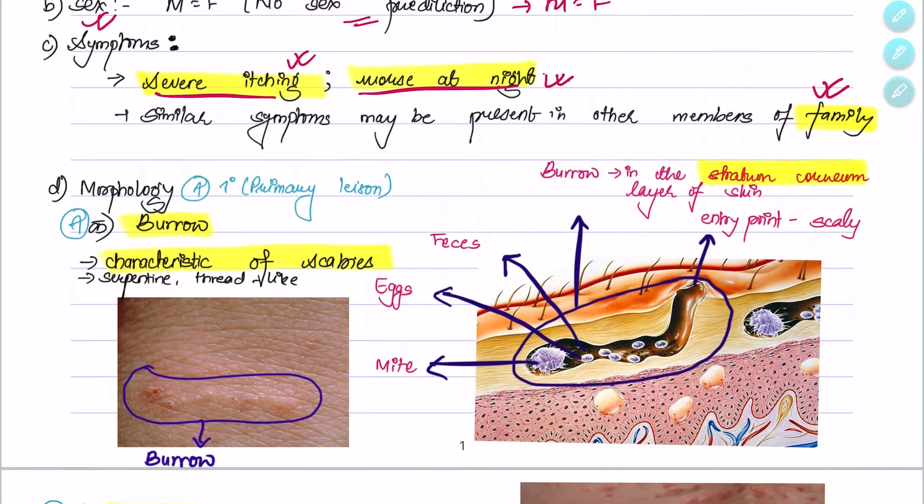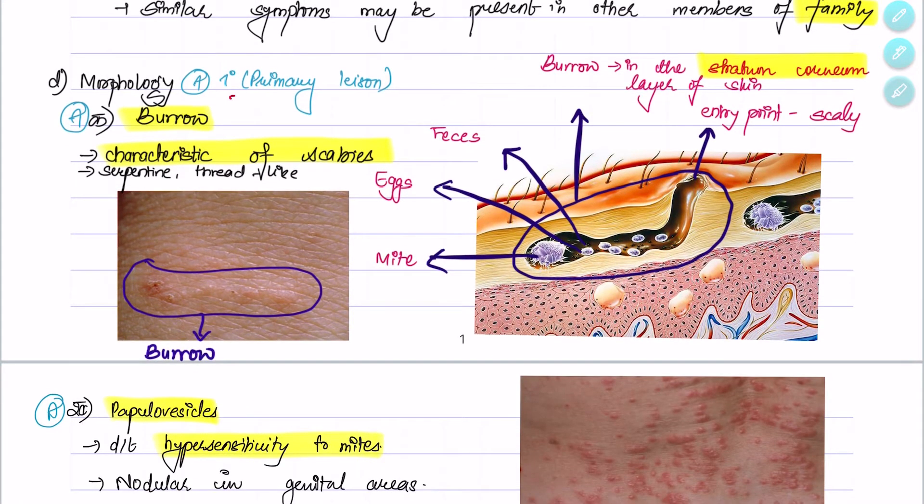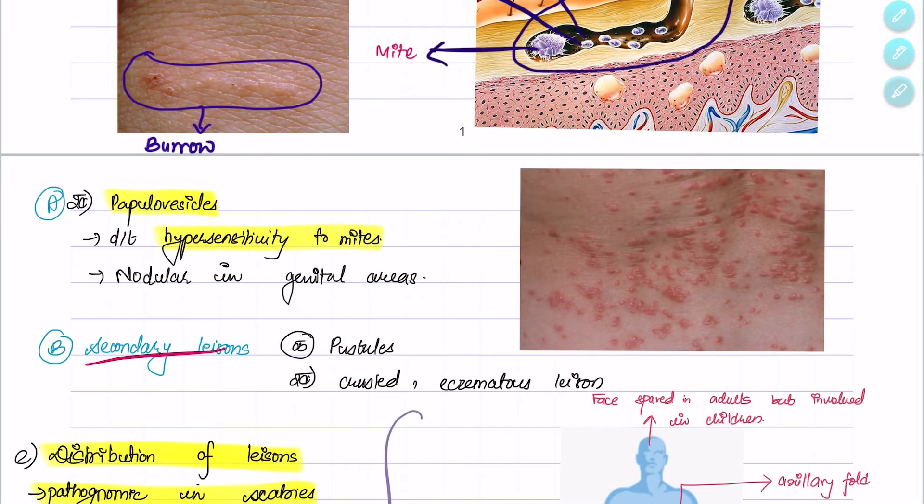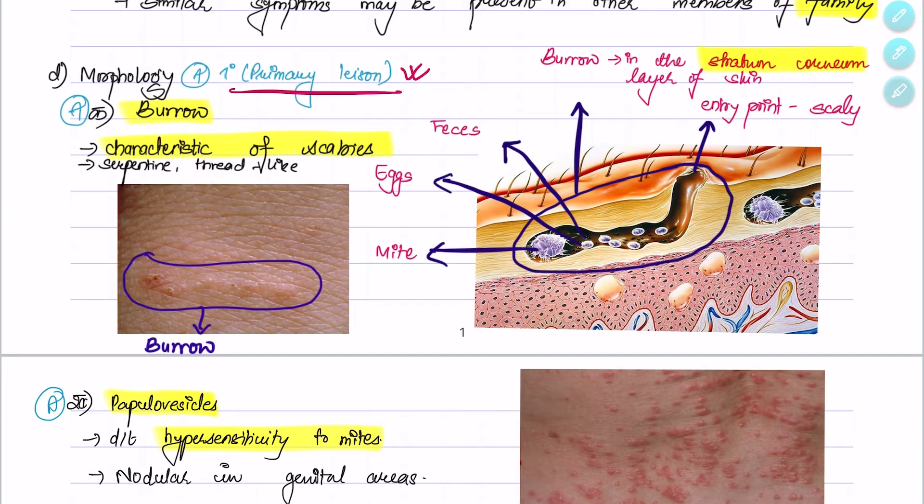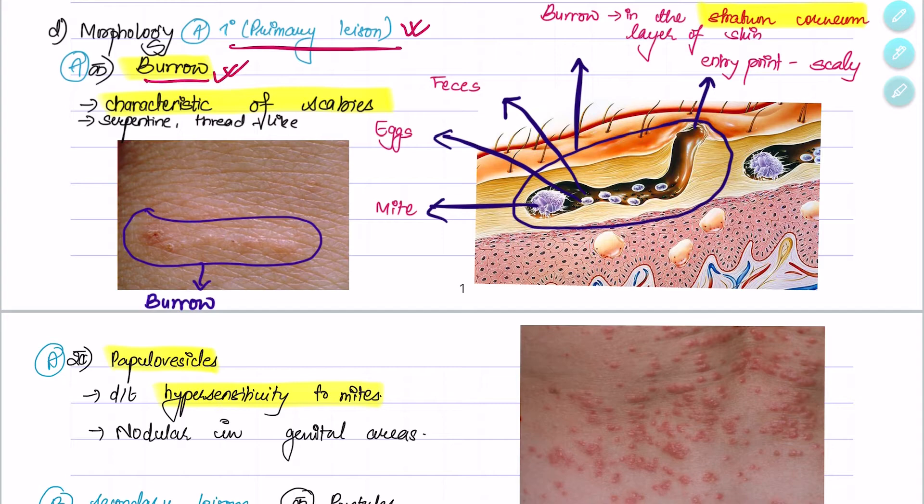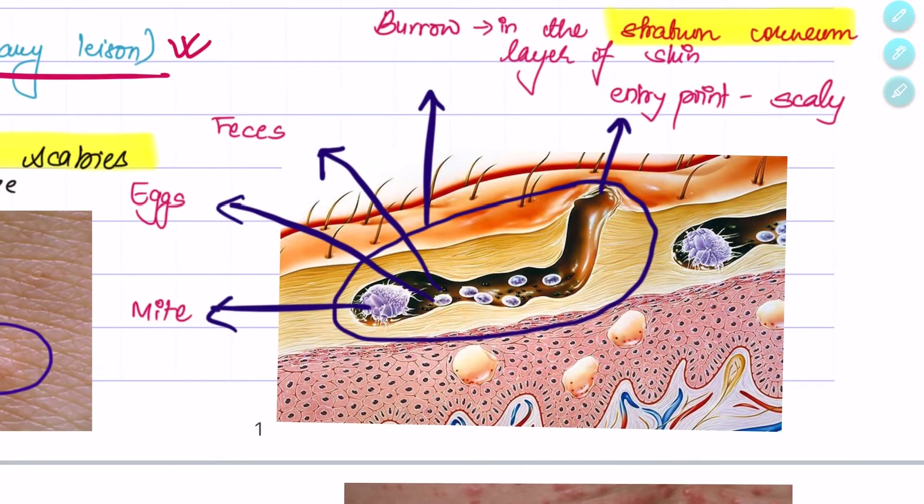Talking about the skin lesions, there are primary skin lesions and secondary skin lesions. Primary skin lesions can be burrows, papules, vesicles, or nodules. In this picture we can see the burrow which is a characteristic feature of scabies. The burrow is formed by the mite itself.